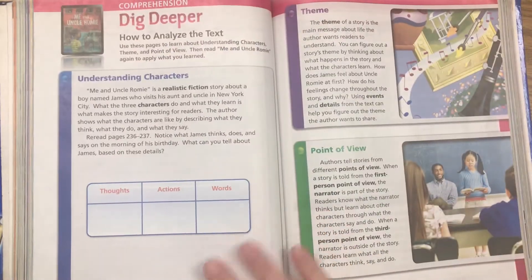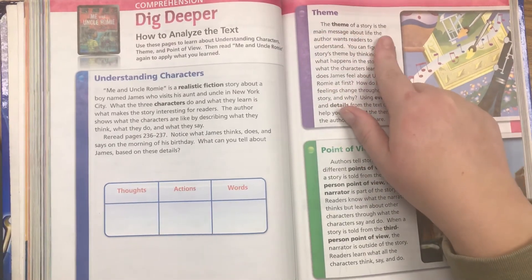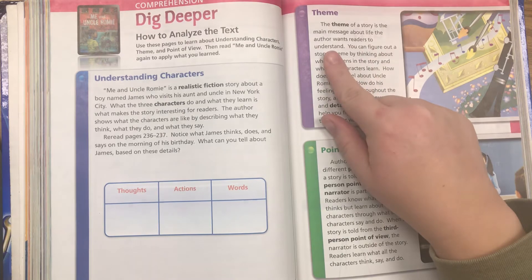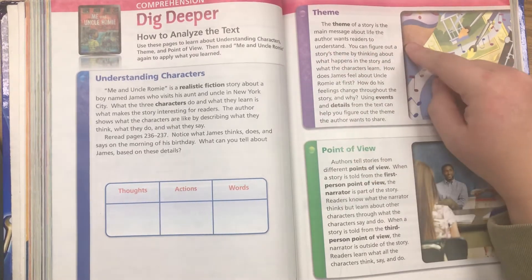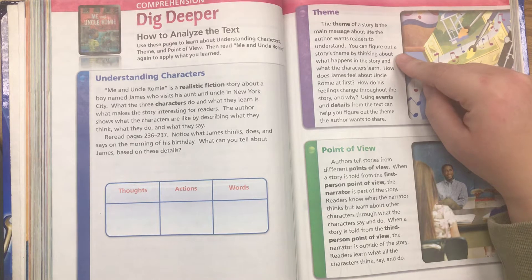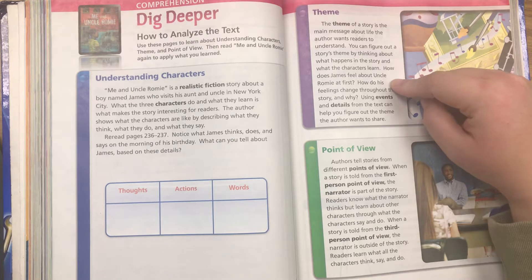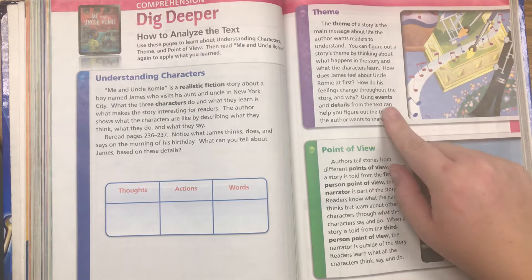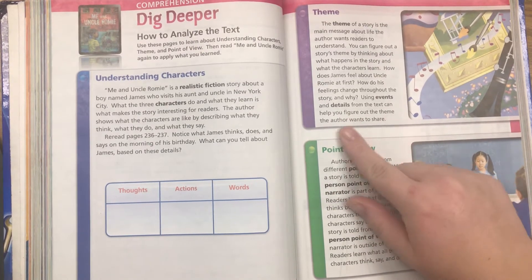The theme of a story is the main message about life the author wants readers to understand. You can figure out a story's theme by thinking about what happens in the story and what the characters learn. How does James feel about Uncle Rami at first? How do his feelings change throughout the story and why? Using events and details from the text can help you figure out the theme the author wants to share.